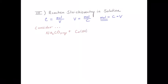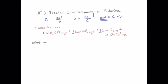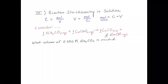We're going to work an example where we do just that. We have an aqueous solution of sodium carbonate reacting with calcium hydroxide. The products are calcium carbonate, an insoluble precipitate, and sodium hydroxide. When balanced, one mole of each reactant produces one mole of calcium carbonate and two moles of sodium hydroxide. Here's our question: what volume of a sodium carbonate solution with a concentration of 0.35 molar is going to be needed to react and produce the precipitate?